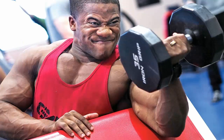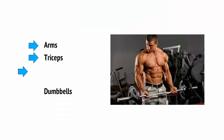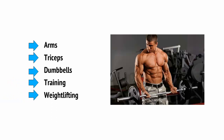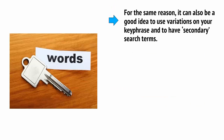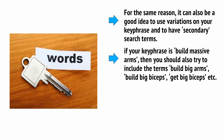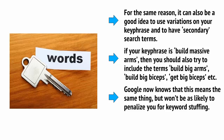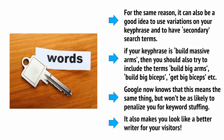If you're writing about bicep workouts, for example, make sure to include lots of related language like arms, triceps, dumbbells, training, weightlifting, etc. Doing this confirms the subject matter of your site and looks a lot more natural and useful than if you just used the phrase. For the same reason, it can also be a good idea to use variations on your keyphrase and to have secondary search terms. If your keyphrase is 'build massive arms,' you should also include terms like 'build big arms,' 'build big biceps,' 'get big biceps,' etc. Google now knows these mean the same thing, but won't be as likely to penalise you for keyword stuffing, and it also makes you look like a better writer for your visitors.